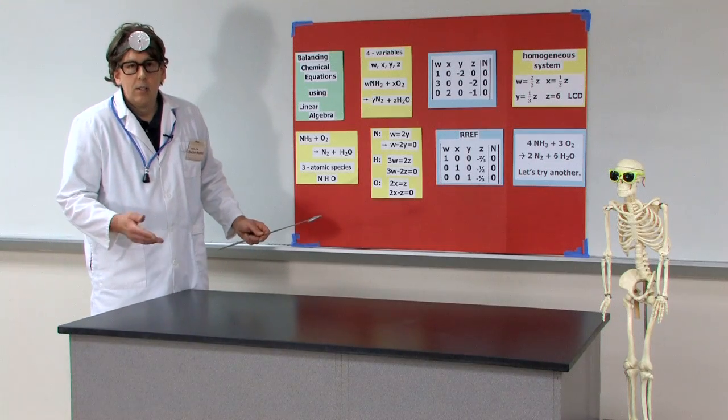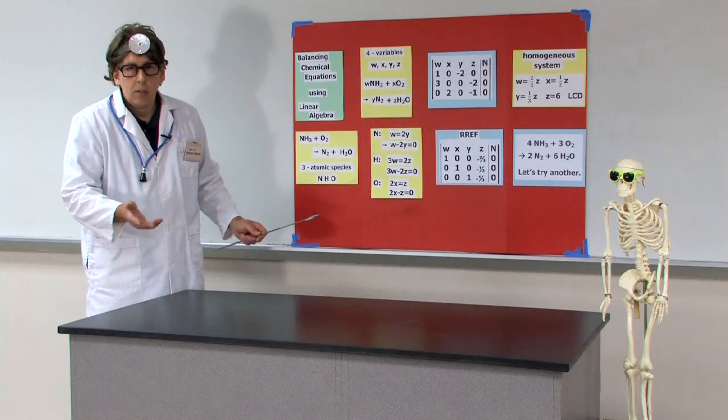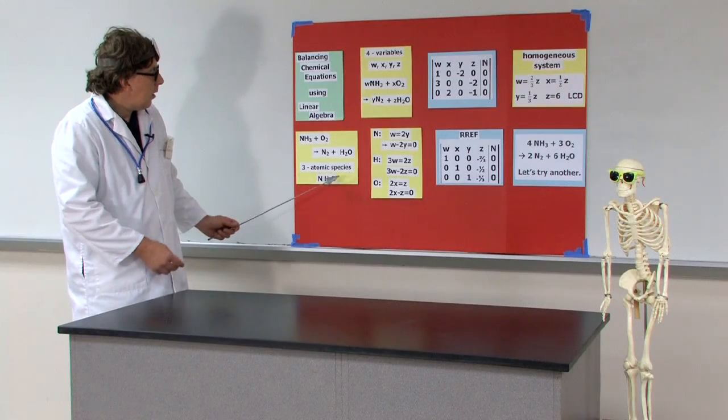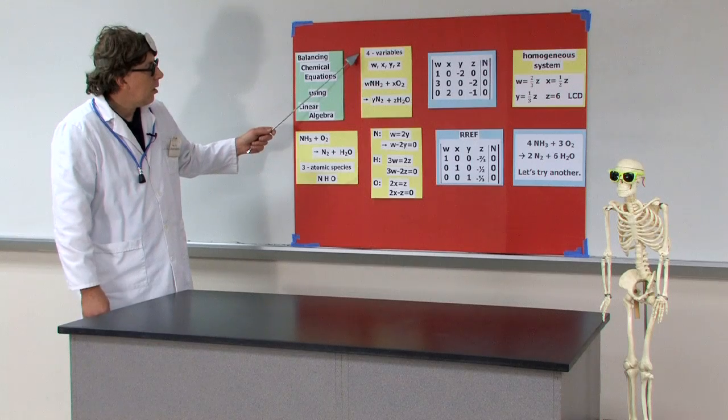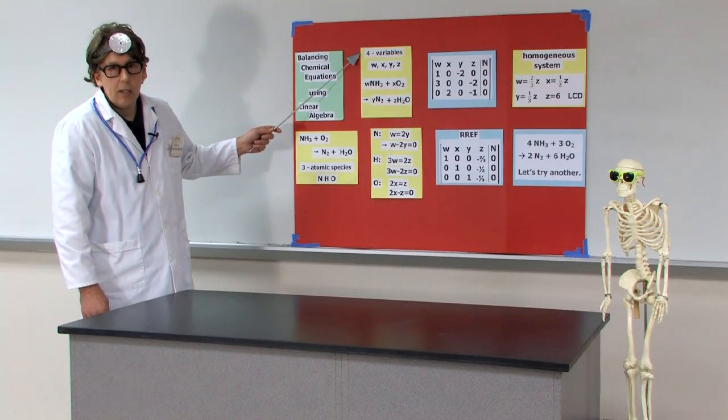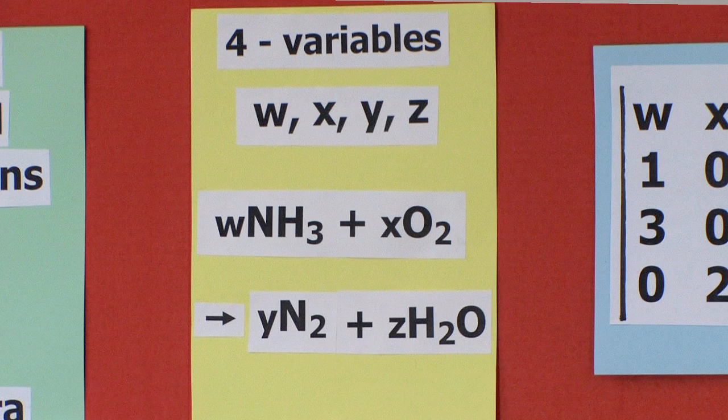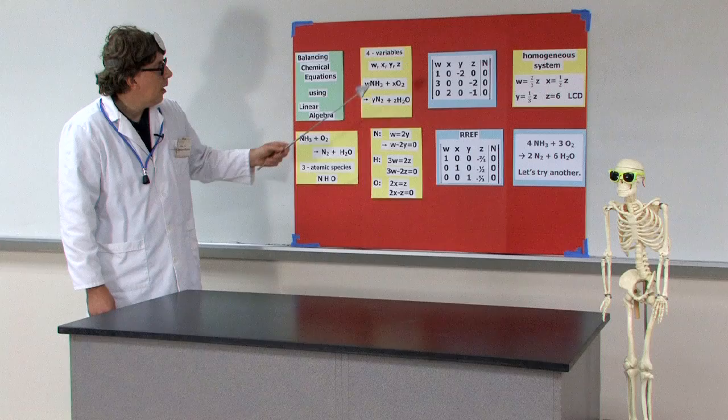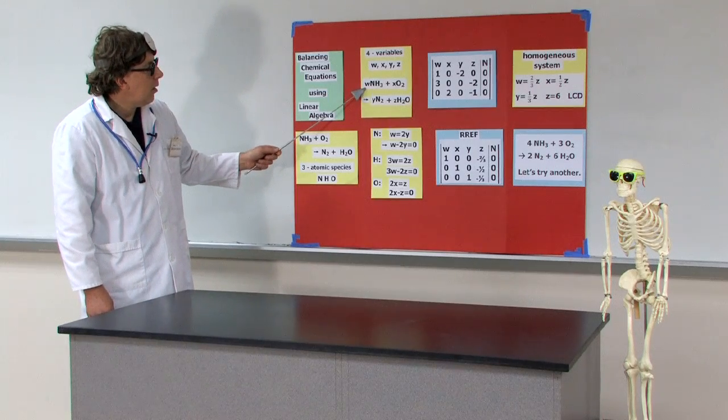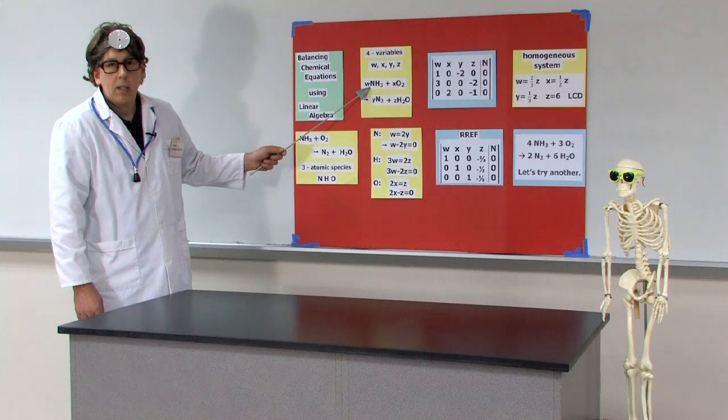So to set up these homogeneous equations in the matrix form, we're going to need the three atomic species and include four variables. We have four variables, in this case W, X, Y, and Z, because we're going to put them in front of each of these atomic species.